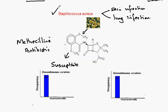In our original population of Staphylococcus aureus, they are susceptible to the antibiotic methicillin, and their frequency — the number of them — is represented by this blue bar here. We know this form as MSSA: methicillin-susceptible Staphylococcus aureus.